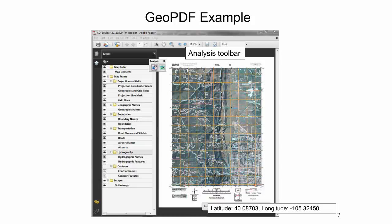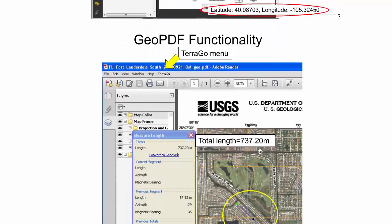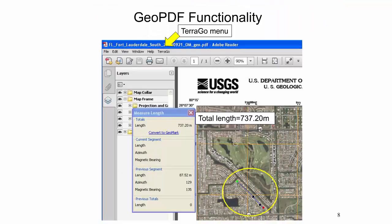Adobe Acrobat Reader provides an analysis toolbar which contains a geospatial location tool. When activated, this tool provides the geographic coordinates — that is, latitude and longitude — of the current mouse pointer position on the map. For full geospatial functionality of the GeoPDF format, the TerraGo toolbar is available as a free plugin for Adobe Acrobat Reader or Adobe Acrobat, downloadable from the web. Two important functions are measuring area and length of a feature, found under the TerraGo menu. In the example, a few street segments are marked through a sequence of nodes to measure their length, and the total length measured amounts to 737.2 meters.